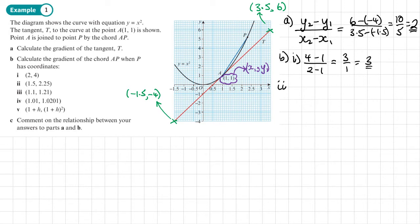Let's look at part 2. What's changing now is that coordinate there. Now x2 is going to be 1.5, y2 is 2.25, still minus 1 over 1.5 minus 1. That is 1.25 over 0.5.